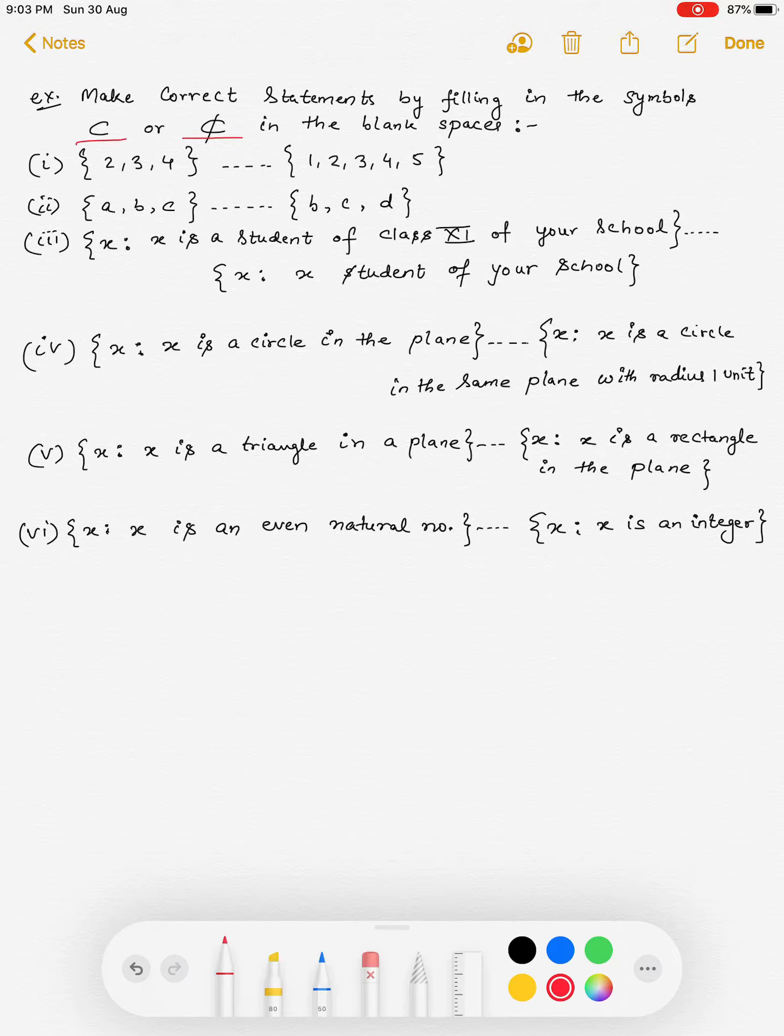अब यहाँ पर proper subset और not proper subset को fill in the blanks में हमें fill करना है. तो 2, 3, 4 इसके अंदर elements आ रहे हैं, तो this is a proper subset of this.